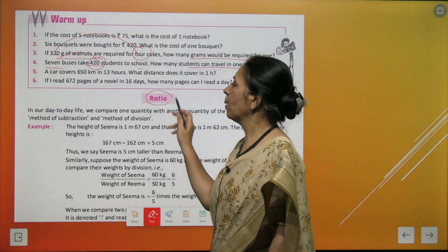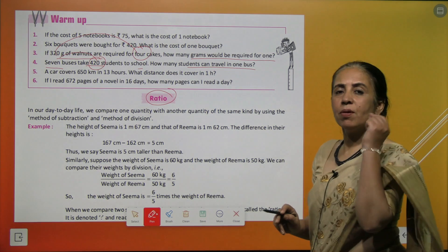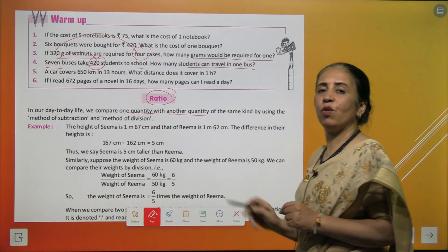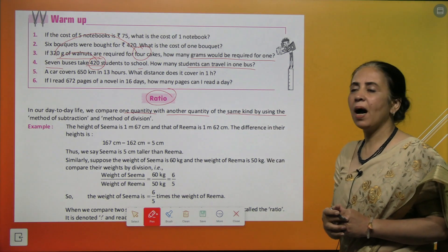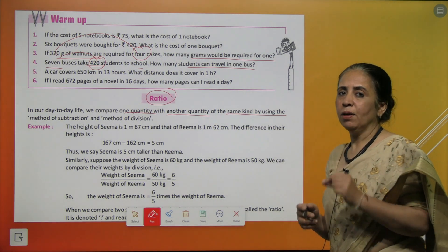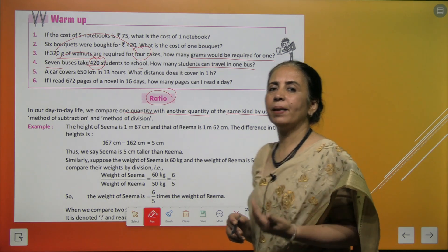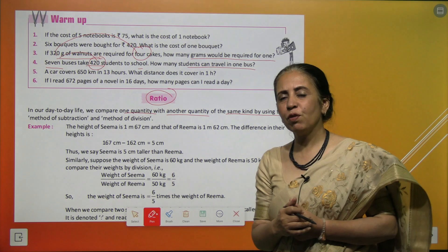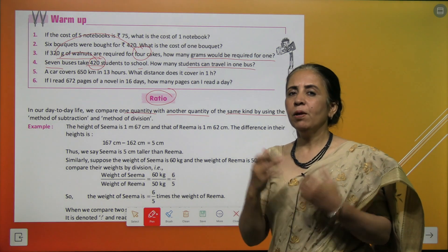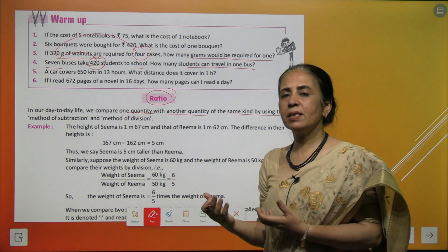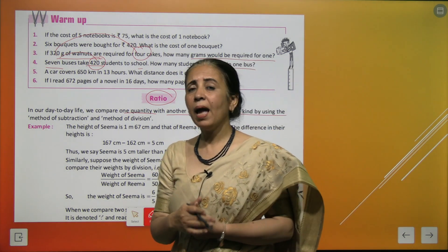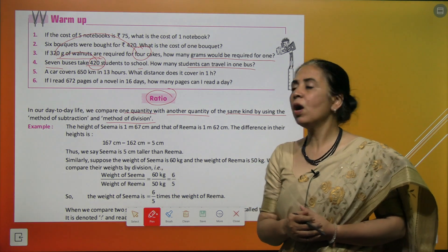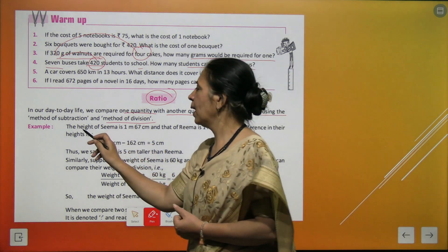Now we talk about ratio. In our day-to-day life, we compare one quantity with another quantity of the same kind. For that, we use two methods. The first is the method of subtraction — if you have 10 toffees and another has 15, we say 15 minus 10, we get 5 more. The second method is the method of division, which is also called ratio.